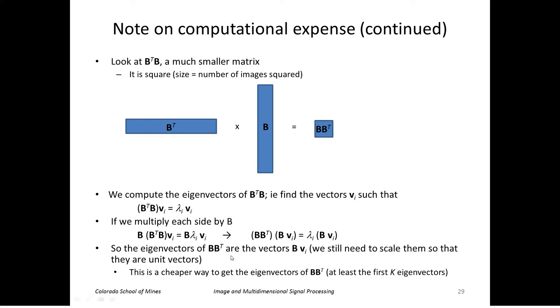So this is a cheaper way to get the eigenvalues of this big matrix, as we get the eigenvalues of this much smaller matrix. We can only get the first K eigenvectors because of course this matrix is much smaller than that other matrix that we had.